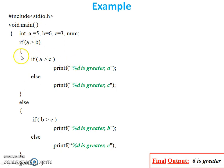Now this is the example. This example is based on the previous flowchart. So a equals 5, b equals 6, c equals 3. Now check: a is 5 and b is 6. Is 5 greater than 6? No, the condition is wrong. So it goes to the else part, and the if will be ignored. Check: b is 6 and c is 3. Is 6 greater than 3? Yes. Then %d is greater, b. It means 6 is greater is the final output of this program.